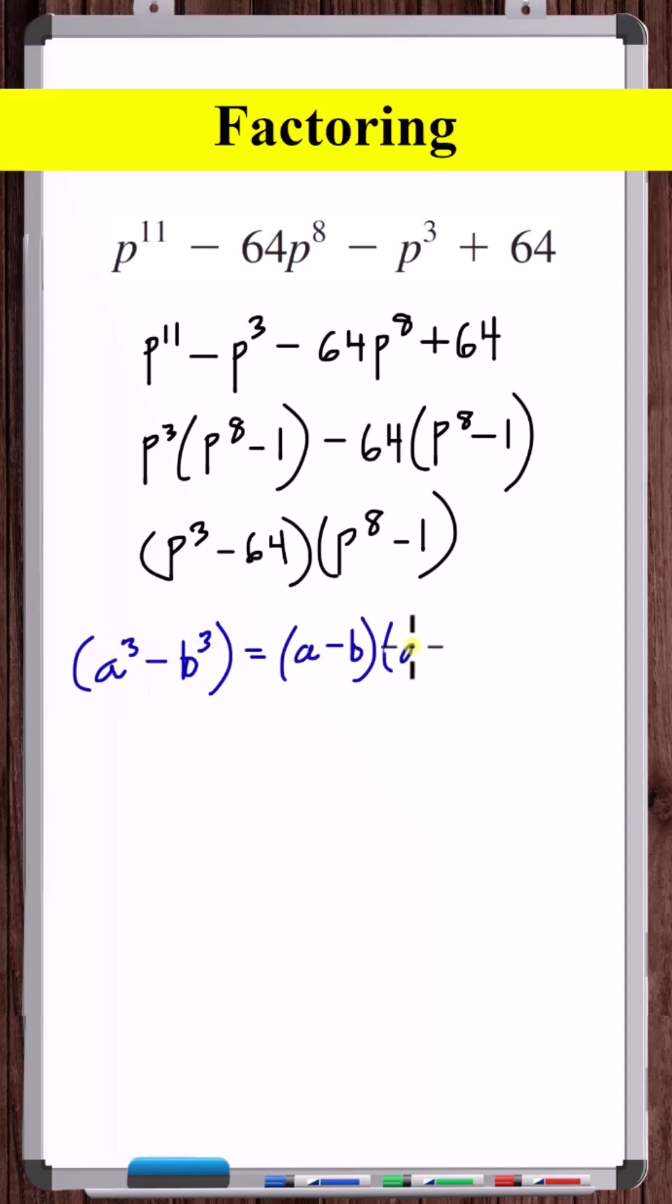To factor the difference of two cubes, so p cubed minus 64. Now here we've got p to the fourth squared minus one squared, difference of two squares.